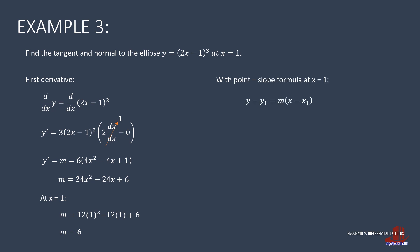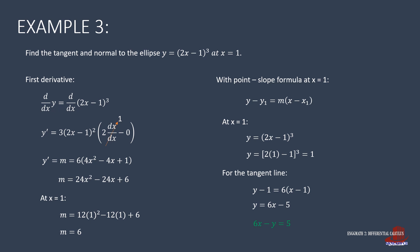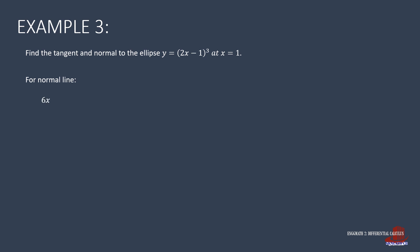The slope is found by plugging x = 1 into the equation, resulting in m = 6. We then apply the point-slope formula, but first need y when x = 1. From the original equation, y = 1. So with x1 = 1 and y1 = 1, the tangent line is 6x - y = 5. For the normal line, interchanging coefficients and changing the sign gives x + 6y, with constant 7 at point (1, 1), so the normal line is x + 6y = 7.